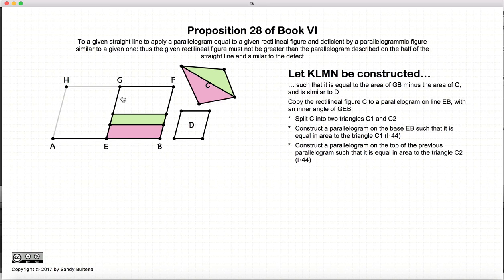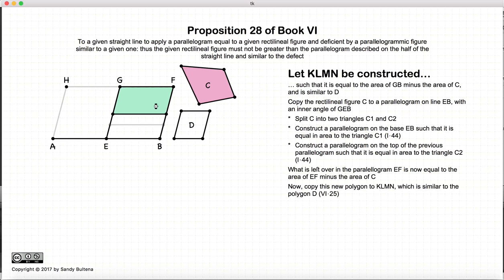So now these two parallelograms together is equal to the area of C, and consequently the remaining part of this parallelogram will be equal to GB minus C. So this area here is GB minus C. So now that we have this area, we can now construct a figure similar to D. We need a figure that's similar to D that is equal to this area. So now KLMN is equal to this green area here, but it is also equal to GB minus C.